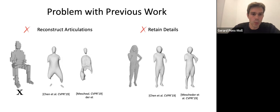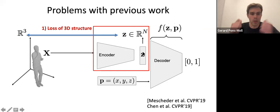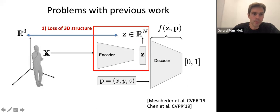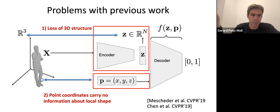The first problem we identified is that the input lives in 3D space, and when we encode it into a latent vector Z, we lose this connection — we have a loss of 3D structure. This makes it more difficult for the network to recover the 3D structure that was present in the input. But perhaps more importantly, we are sending point coordinates into the decoder, and point coordinates carry no information about shape. Because if I rotate the shape, the intrinsic shape is the same but the point coordinates will be different — it feels arbitrary to feed a neural network with point coordinates.